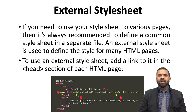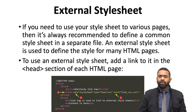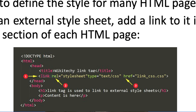To use an external style sheet, add a link to it in the head section of each HTML page. In the example: doctype HTML, then HTML, then head, then in the title tag we have 'wiki techie,' then the link tag — rel equals to stylesheet, type equals to text/CSS, then href equals to link_CSS.css. So in href we are providing the link for the particular CSS file.